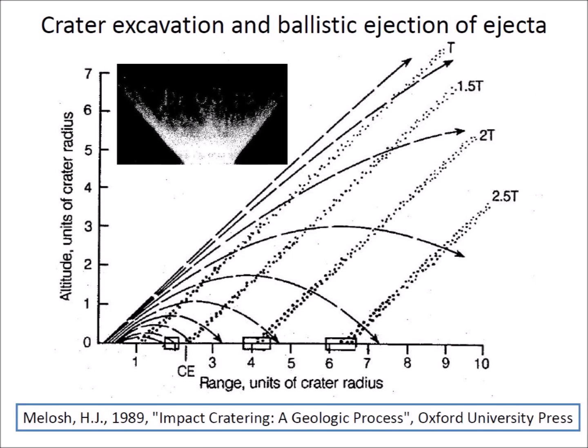The debris ejected from an impact crater follows ballistic trajectories from its launch position within the crater. When the crater is excavated, the innermost ejecta are launched first and travel fastest, following the steepest trajectories. Ejecta originating further from the center are launched later and move more slowly,